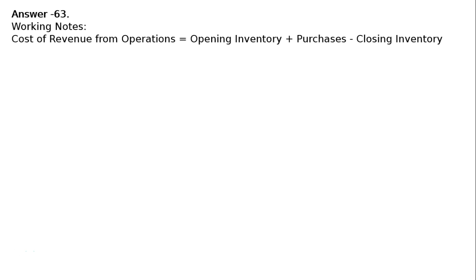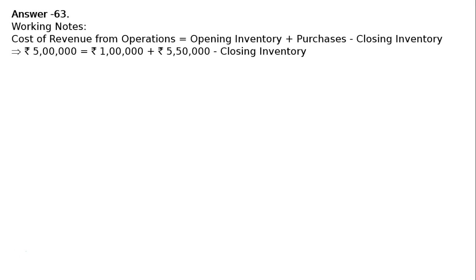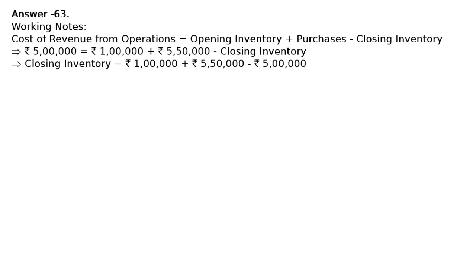Closing inventory has not been given, but all other values are given. So, Rs. 5 lakh equals Rs. 1 lakh plus Rs. 5 lakh 50,000 minus closing inventory. Changing the side, closing inventory equals Rs. 1 lakh plus Rs. 5 lakh 50,000 minus Rs. 5 lakh, which gives us closing inventory equal to Rs. 1 lakh 50,000.